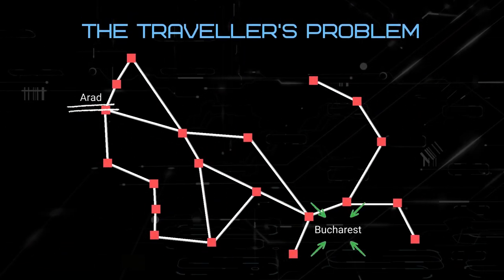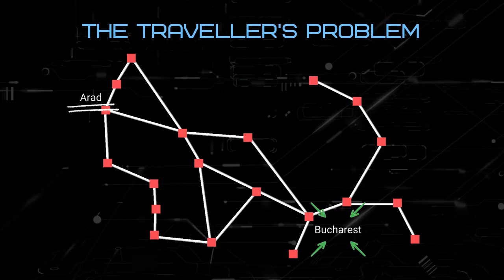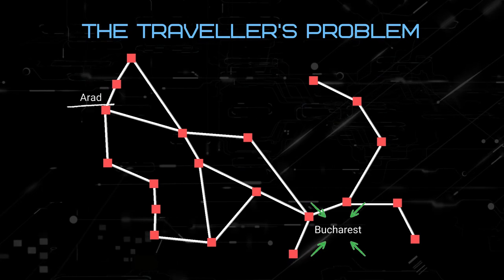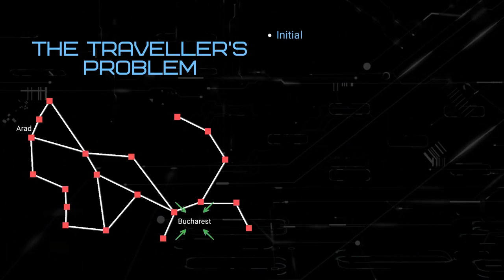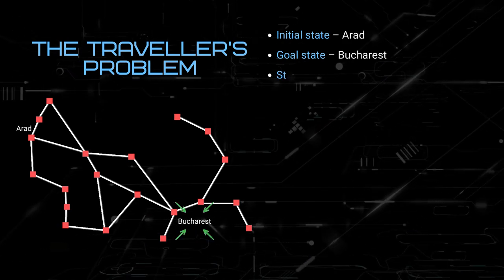This is the Traveller's Problem, a famous AI problem whereby we need to get from Arad to Bucharest using the best path. In this problem, the initial state is Arad, which is the city we are currently in.